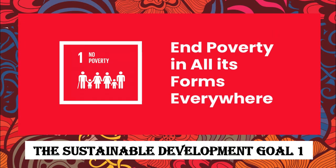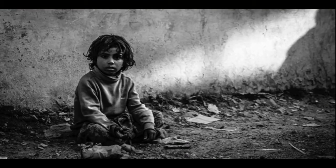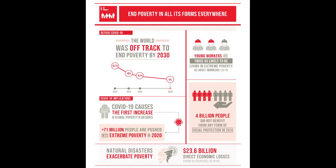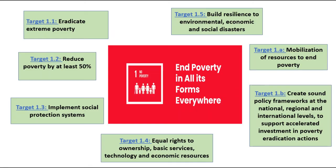Global poverty reduction is one of the world's greatest collective successes since the 1990s, yet in 2017 almost 700 million people still live below the international poverty line of $1.90 per day. SDG 1 aims to eradicate every form of extreme poverty, including lack of food, clean drinking water, and sanitation. Here are the precise things it tries to achieve within 2030: eradicate extreme poverty for all people everywhere, currently measured as people living on less than $1.25 per day.